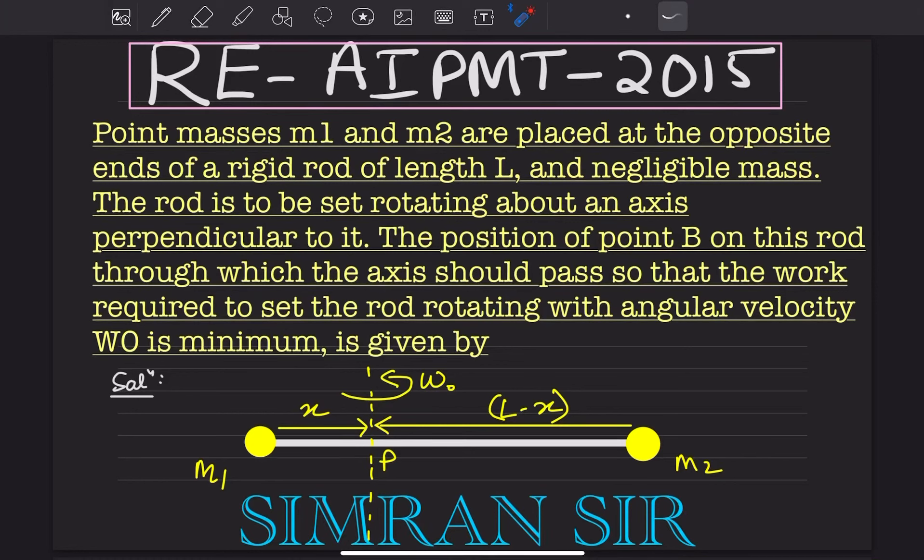Point masses M1 and M2 are placed at the opposite ends of a rigid rod of length L and negligible mass. The rod is to be set rotating about an axis perpendicular to it. The position of point B on this rod through which the axis should pass so that the work required to set the rod rotating with angular velocity omega naught is minimum is given by.